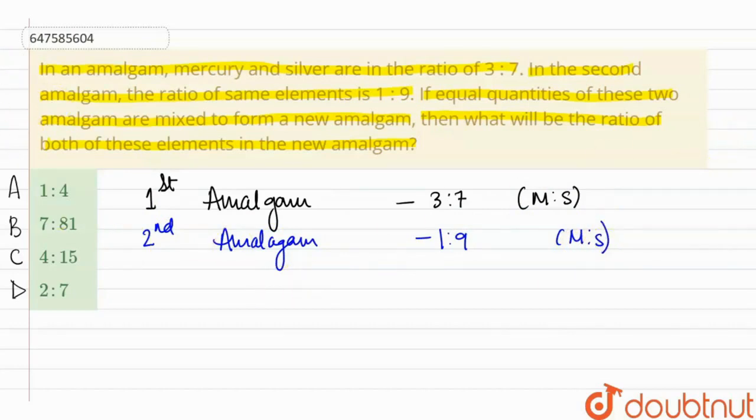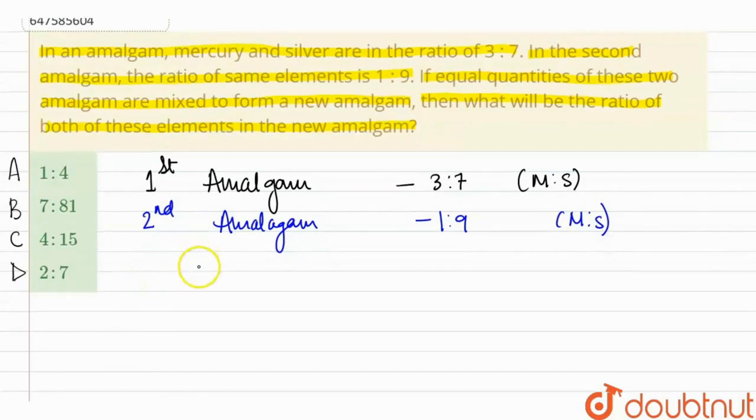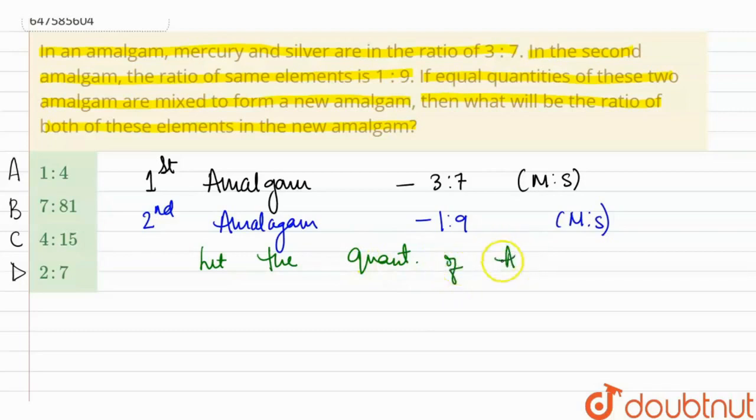Now, both amalgams are mixed. So let the quantity of amalgam mixed be x. Therefore, in the first amalgam, quantity of mercury will be 3/10x, because there are total 10 units - 3 plus 7 is 10 units.